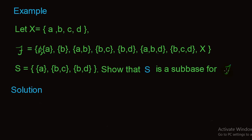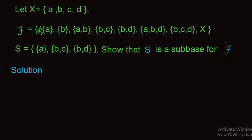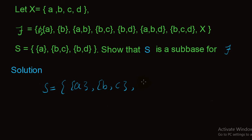We have to show that S is a sub-base for tau. To show this, we need to find the finite intersections of members of S. Here S equals the elements: singleton set {a}, {b,c}, and {b,d}.